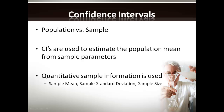When we find a sample mean, we want to try and determine what the population mean is. Confidence intervals are a way that we use to estimate the population mean from sample parameters. We use sample information — specifically sample mean, sample standard deviation, and sample size — and use a confidence interval calculation to try and estimate what the population mean is based on that sample.